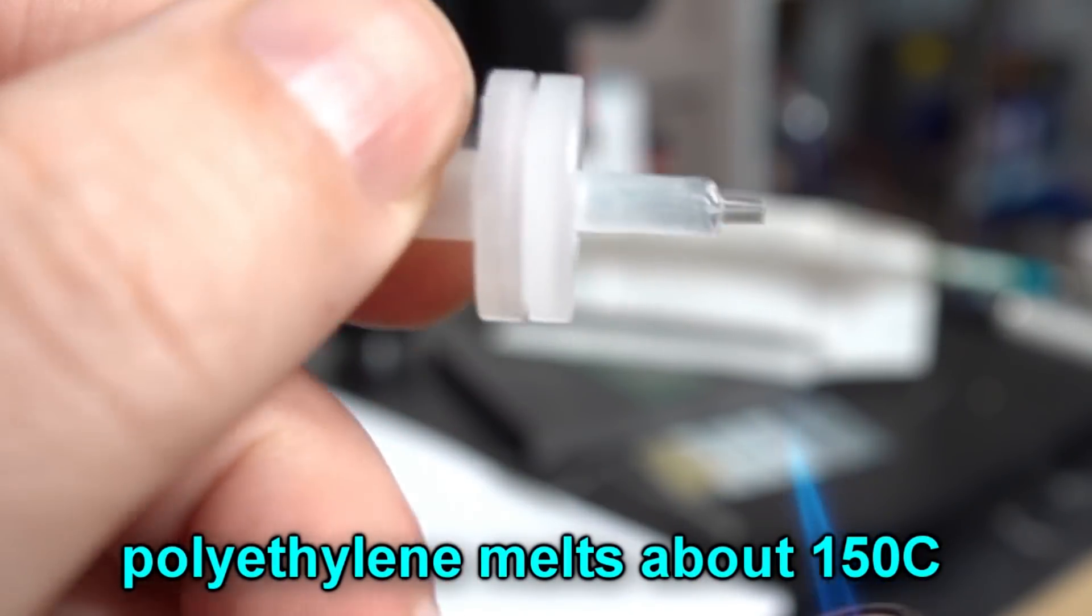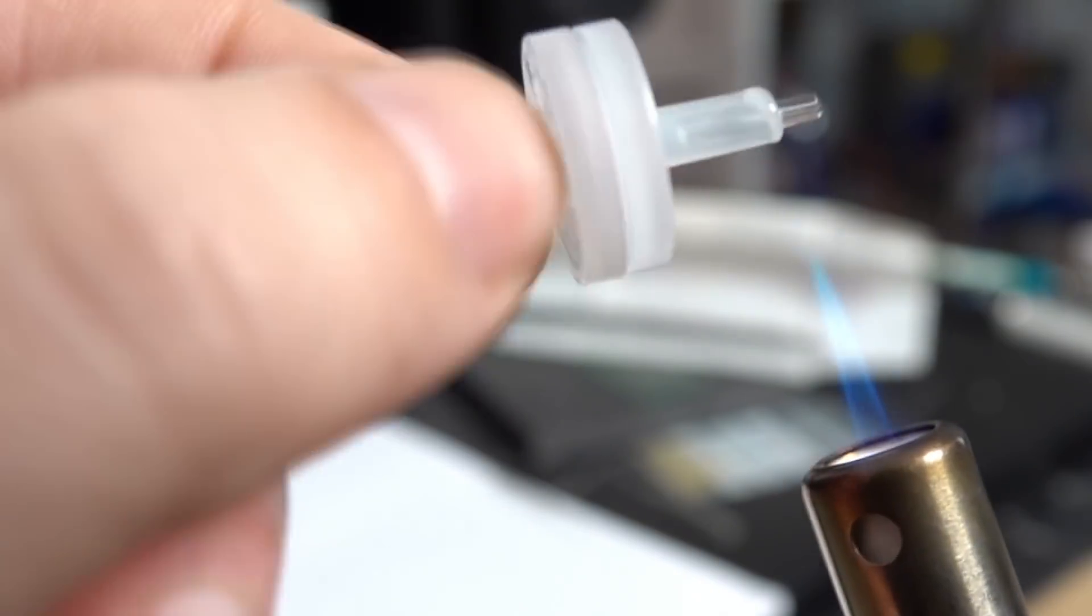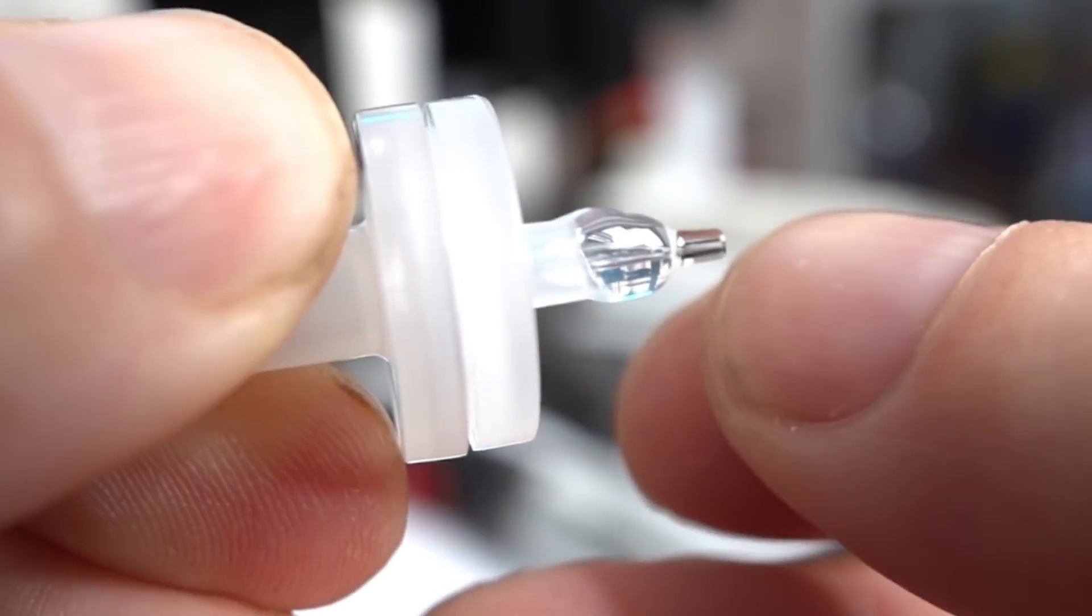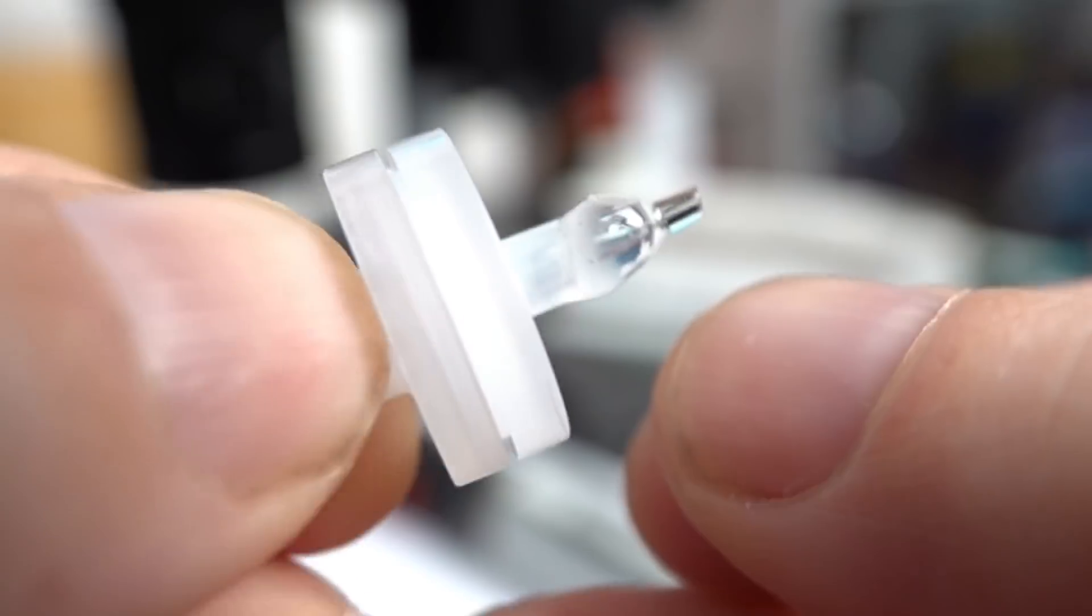So the first step was to make a liquid metal microjet. Well, that turned out to be fairly simple. We'd made these microjet nozzles before, and it turns out they ran liquid metals quite well.